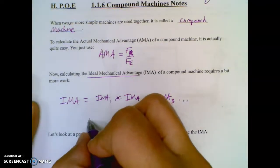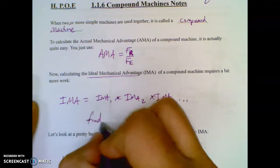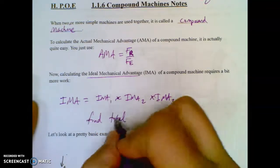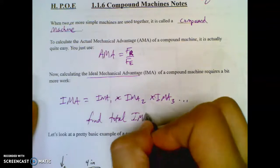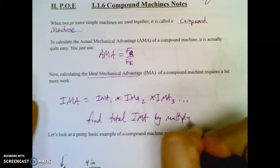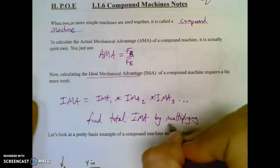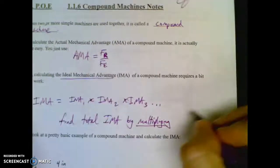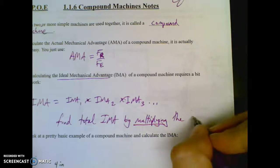So you find the total IMA by multiplying the pieces together.